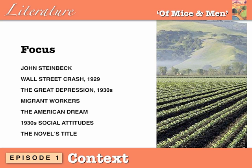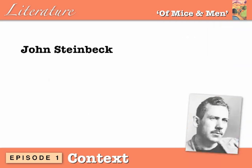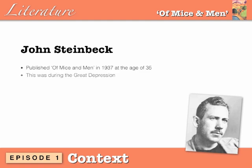So, about John Steinbeck. He published Of Mice and Men in 1937 at the age of 35, and this was significant because it was still during the Great Depression, which we'll define shortly.